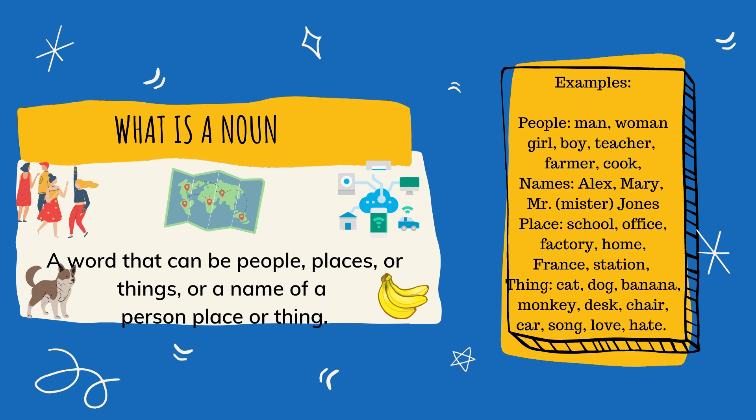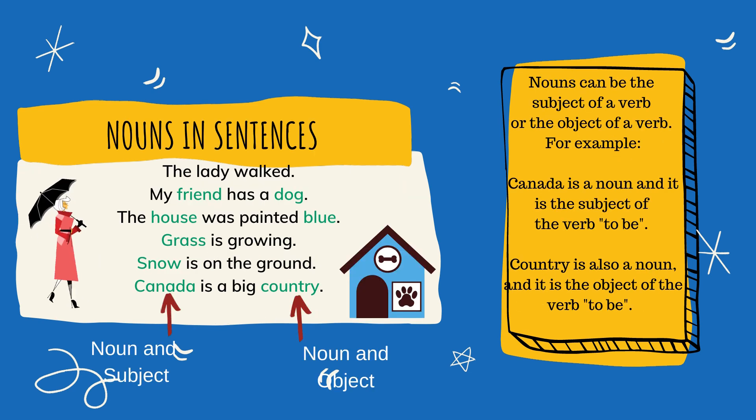Examples of nouns are: men, woman, girl, boy, teacher, farmer, and cook. Names could be Alex, Mary, Mr. Jones. A place could be school, office, factory, home, a country like France, a station. And a thing could be a cat, dog, banana, monkey, desk, chair, car, song, even emotions like love and hate. Those are what nouns are.